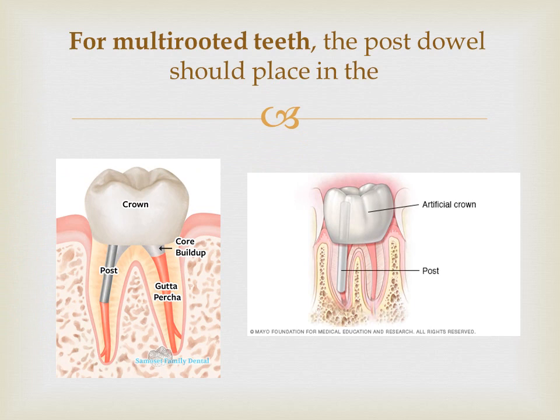For multi-rooted teeth, the post or dowel should be placed in the largest canal — usually the palatal canal for upper molars, the distal canal for lower molars, and the buccal canal for maxillary premolars. The other canals should be used for the key-way.